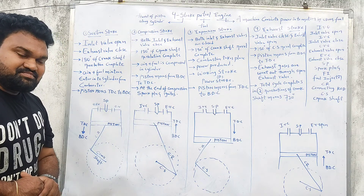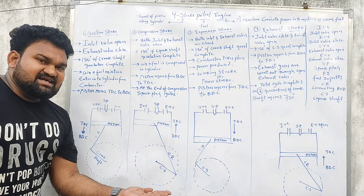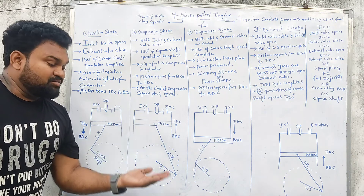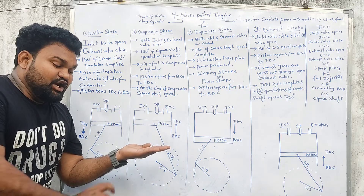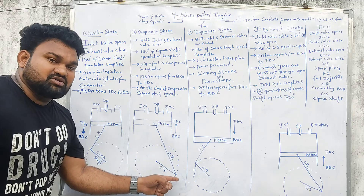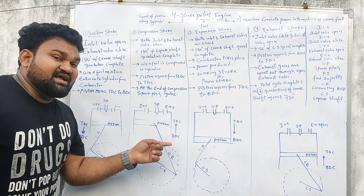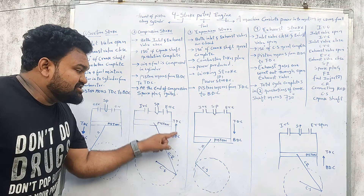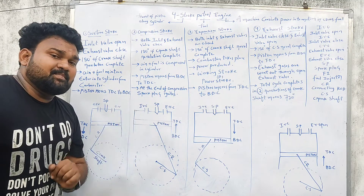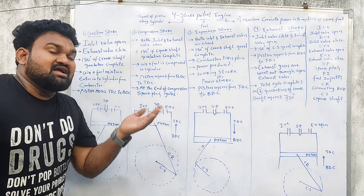The first suction stroke is complete. Next is the second stroke — the compression stroke. The piston is at the bottom dead center and moves to the top dead center. The air plus fuel mixture which entered the cylinder is now compressed.